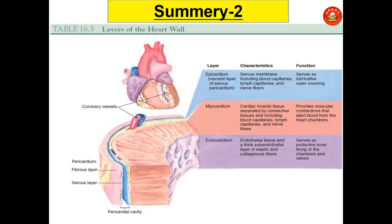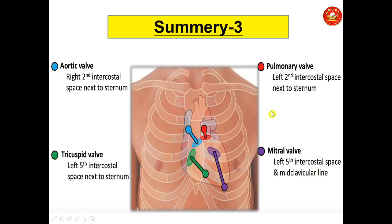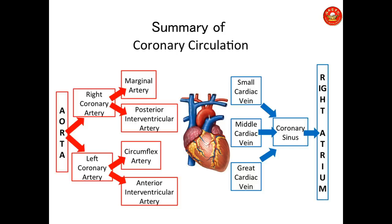In summary: the layers of the heart wall are the epicardium, myocardium, and endocardium with their characteristics and functions. The valve summary covers their location, components, and where we can auscultate them.